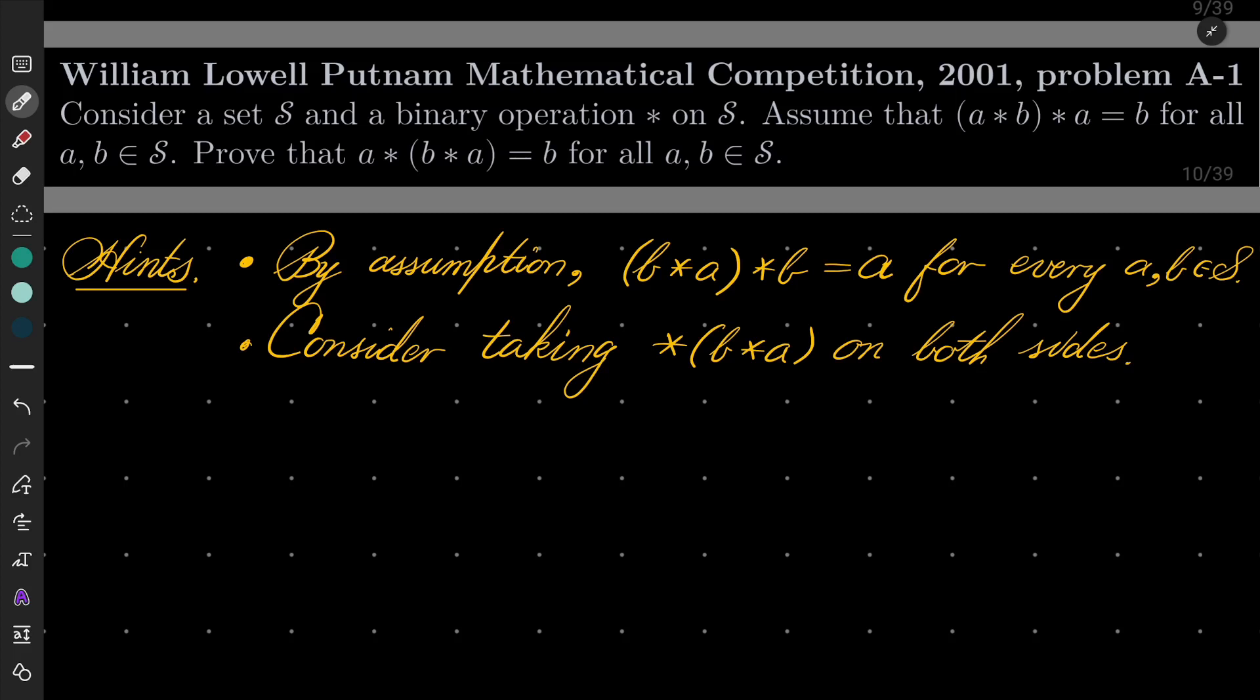Consider a set S and a binary operation star on S. So it takes two elements of S and maps them to another element of S. Let's assume that (a star b) star a equals b for all a and b which are in our set S.